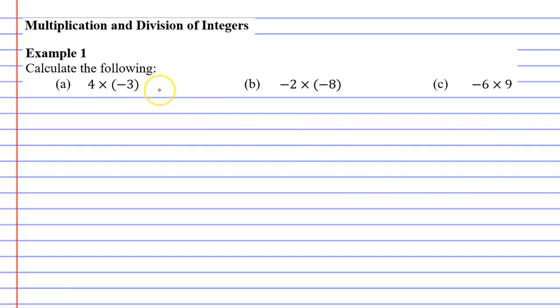We've got 4 times negative 3 and when we do this we focus just on the numbers first, completely ignoring any negatives. 4 times 3 is 12, and then you look back at the original question and go, okay, we only had one negative, and if there's only one negative our solution is also negative.